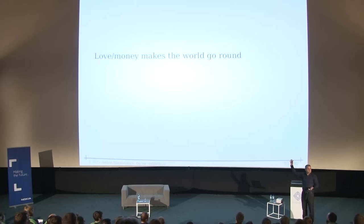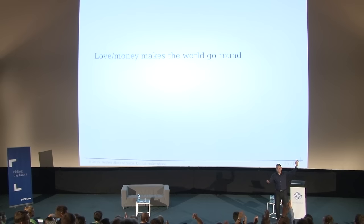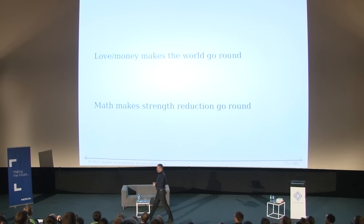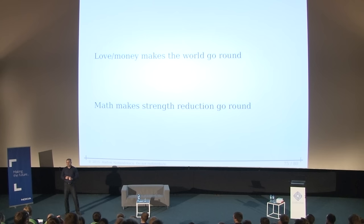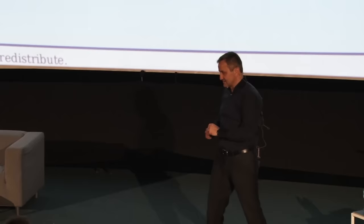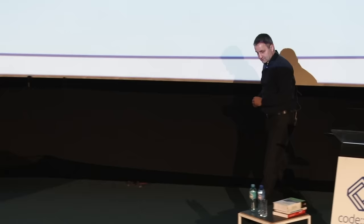People say it's either money or love that makes the world go round. Nobody here for love? All for money — this is my crowd. But it turns out that by the same logic it's math that makes strength reduction work. If you want to analyze algorithms and make them faster, it's not so much the assembler-level tricks you need to look at, but the mathematical axioms and equivalences — the theorems you can prove. Math makes strength reduction work.